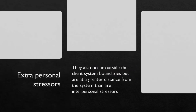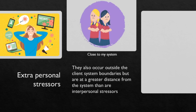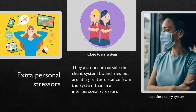The last one is extra-personal stressors. They also occur outside the client's system boundaries, but are at a greater distance from the system than our interpersonal stressors. For example, when we started getting the news of COVID outbreak in the beginning, maybe it did not affect us directly, but it created stress for us. This is happening outside my system and is not close to my system like the interpersonal was — because in that case there was a fight, I was involved. Here I am not involved, so it is at a greater distance from me. Still, I am stressed. That is extra-personal stressors.